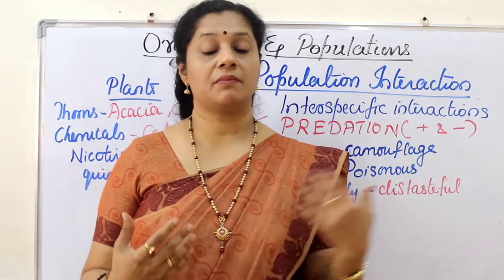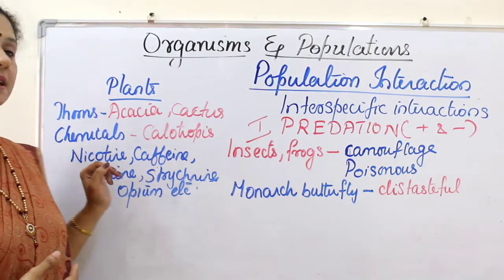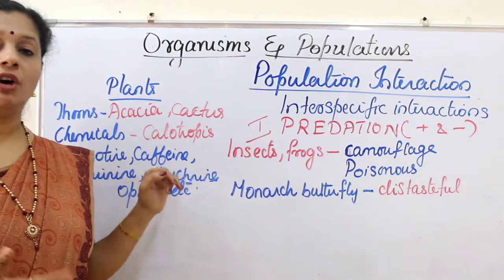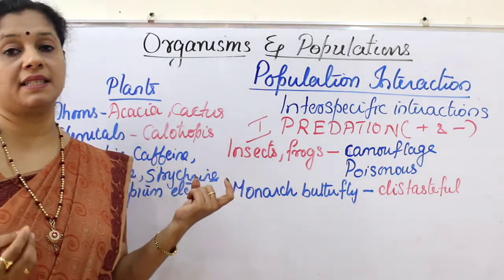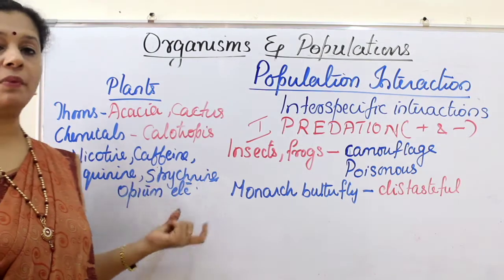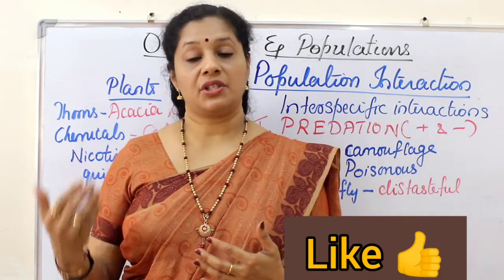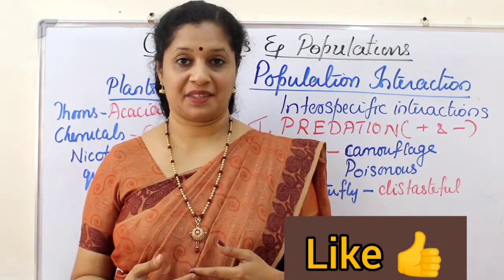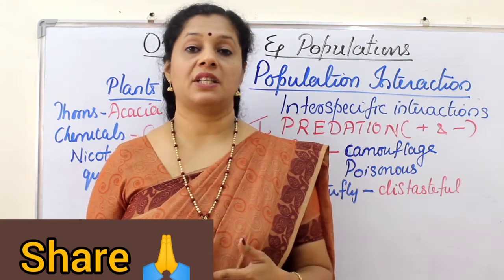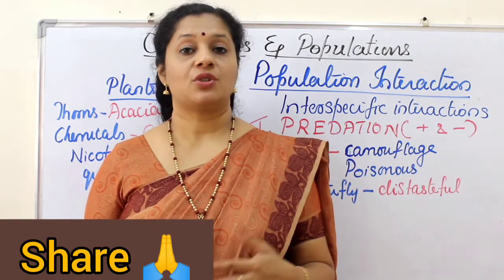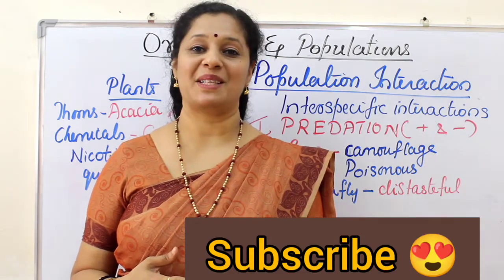We have many uses based on these chemicals, but plants produce them for their defense. Examples include nicotine in tobacco, caffeine in coffee plants, quinine from Cinchona officinalis — which is a medicine for malaria — strychnine, opium, and others that we use commercially. These are the key points to remember under inter-specific interaction: predation. If you like my videos, please like, share, and subscribe to the channel Biology My Passion.